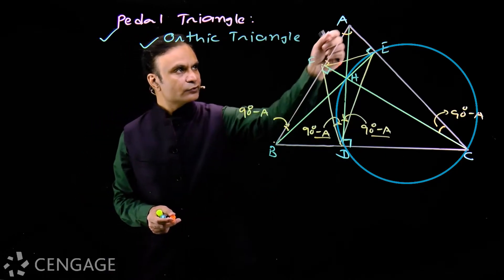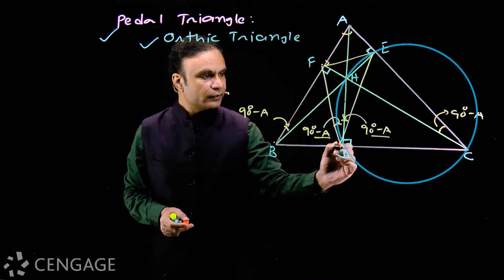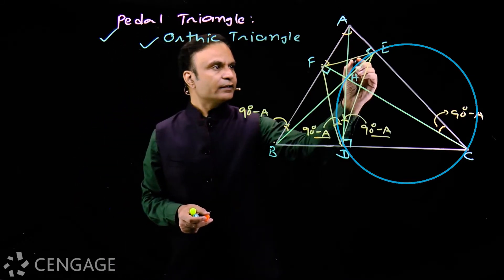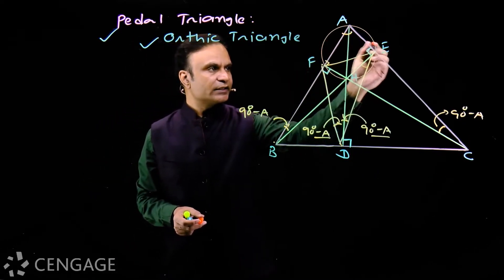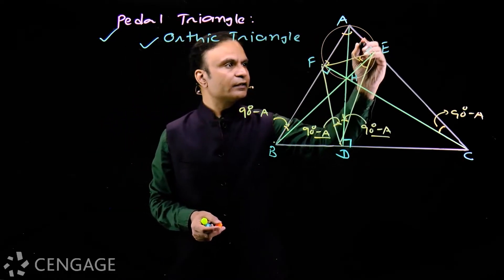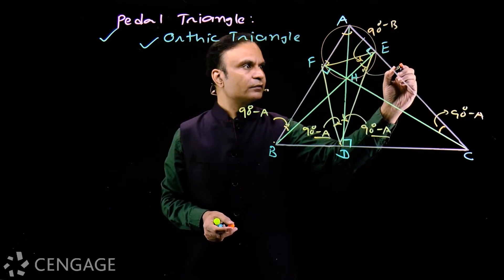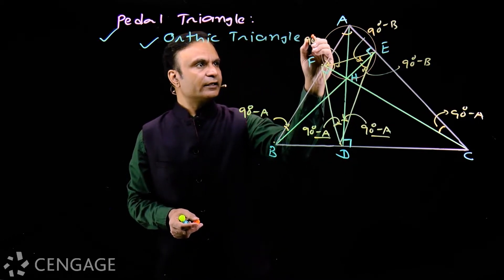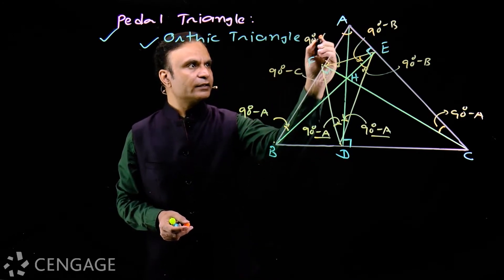The altitude from vertex A is the internal angle bisector of angle D in the pedal triangle. Similarly, considering points A, F, H, E which are concyclic with AH as diameter: the corresponding angles are 90° − B and 90° − B, and 90° − C and 90° − C.